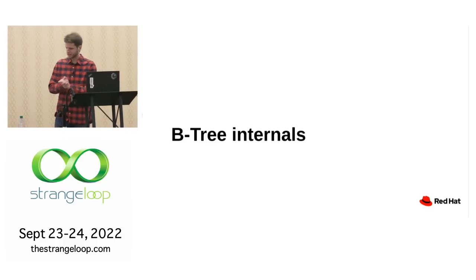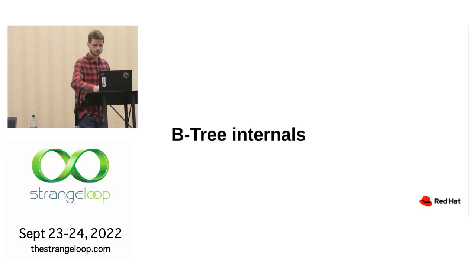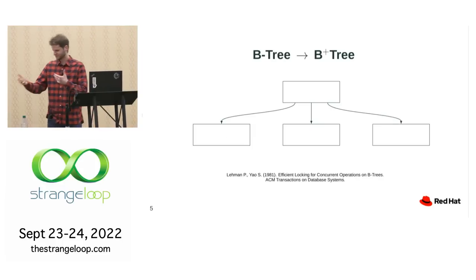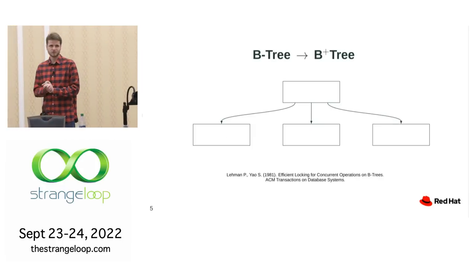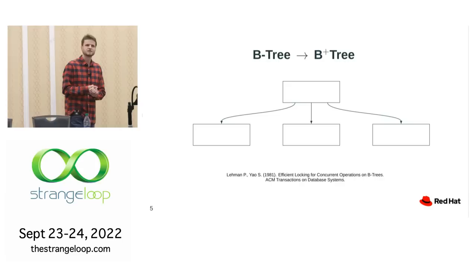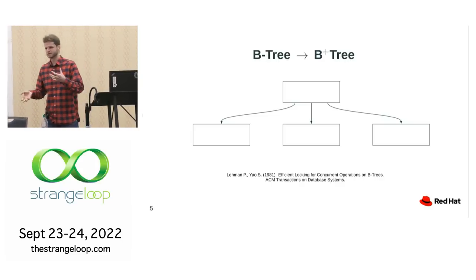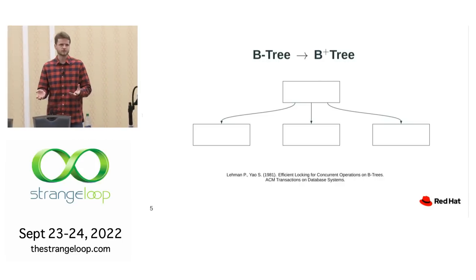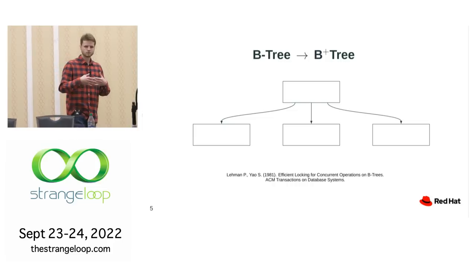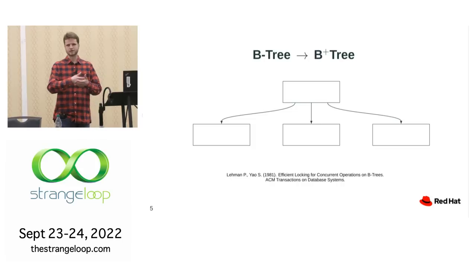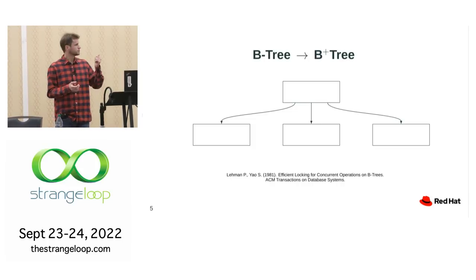Now, talking about B-trees — we have to establish some definitions. Every time we talk about B-trees nowadays, we actually normally talk about B-plus-trees. The only difference is that with a B-plus-tree, you store the actual data — the actual keys being indexed — in the leaf nodes. So normally, every time you see 'B-tree,' it usually means B-plus-tree.